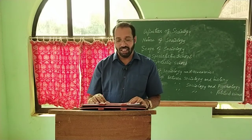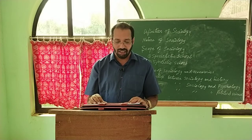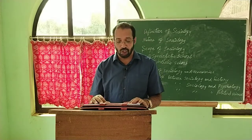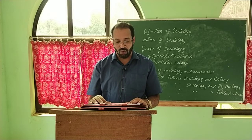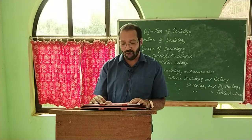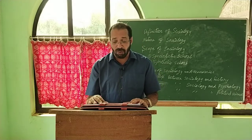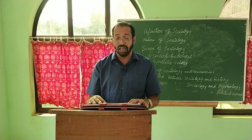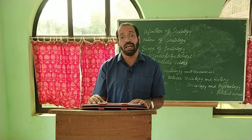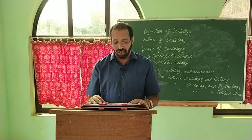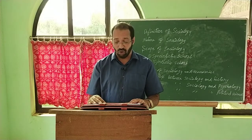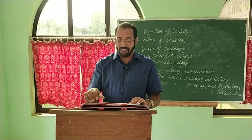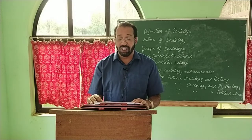Dear brothers, in this first unit of sociology we study the definition of sociology, the nature of sociology. Then there are two schools that speak of the scope of sociology. The first one is the specialistic school and the second one is the synthetic school. Then we see the relationship of sociology with other social sciences. The last part of this unit covers the methods of sociology.